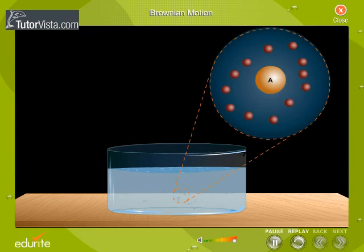Here you can see an isolated large particle A suspended in a solution. A number of molecules hit the particle A from all sides. On average, the impact mutually cancels out, so the resultant force on the particle is zero.